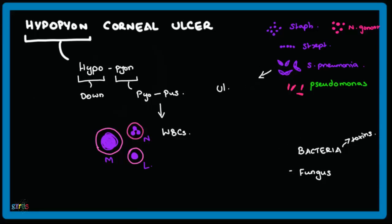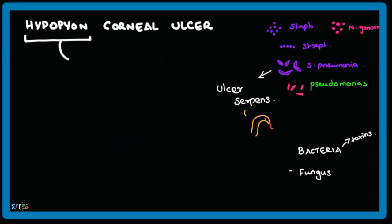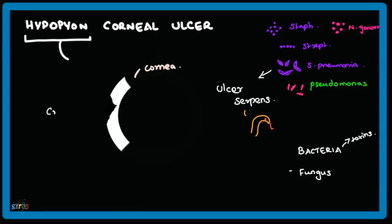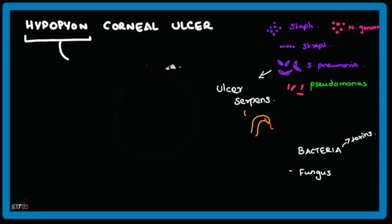The hypopion corneal ulcer caused by Streptococcus pneumoniae is called ulcer serpens. Serpens means snake. It is because the corneal ulcer slowly progresses in a snake-like form — it creeps in and burrows deep slowly. That is why it is called ulcer serpens.